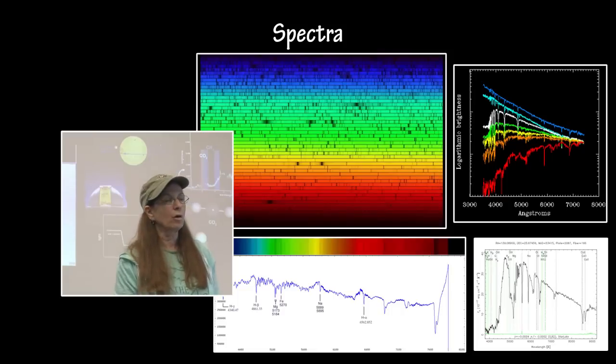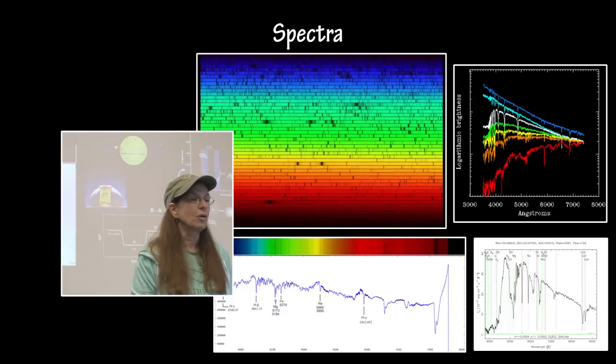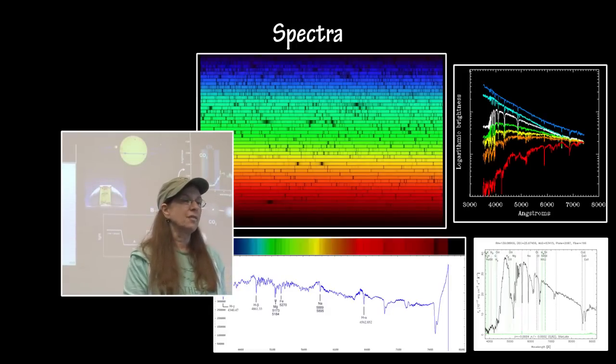Spectra on the lower right-hand side is a spectra of the atmosphere around an exoplanet and shows the molecules - the methane and the water and the carbon dioxide that are in the atmosphere and how much of it is in the atmosphere.